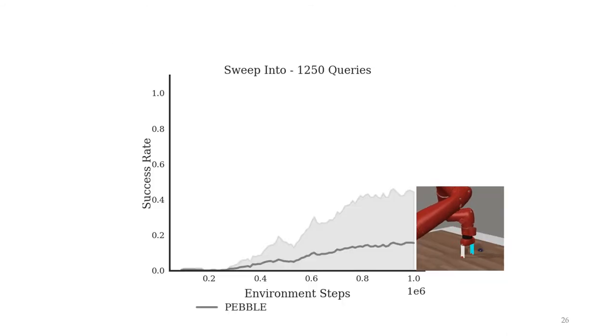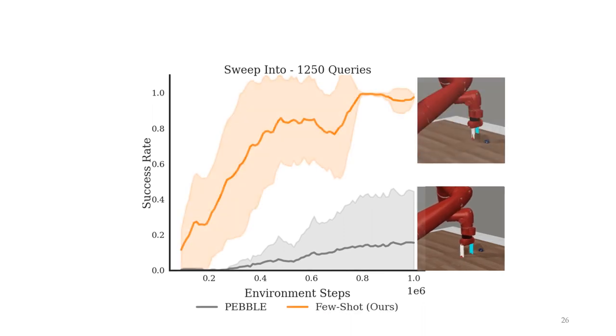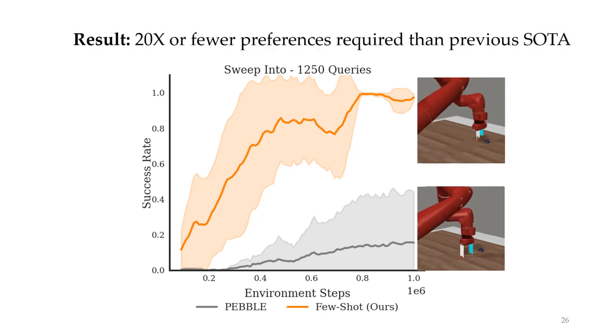Let's look at a simple block manipulation task. Pebble fails to learn any meaningful behavior with only around 1000 queries. However, our approach, which leverages the pre-trained data, learns a perfect policy, picking up the block and placing it into the target position with a near 100% success rate. The overall result of our method is that we require 20 times or fewer preferences required than Pebble.